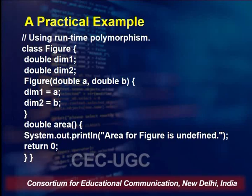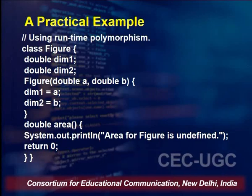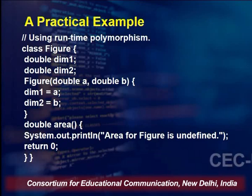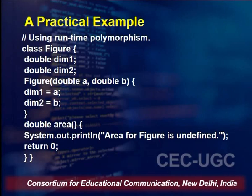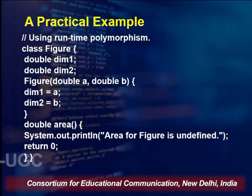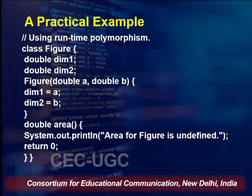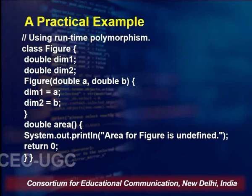Here we have a class Figure which has two dimensions — dim1 and dim2 — both of type double. There is a constructor taking two double values a and b, which are assigned to dim1 and dim2 respectively. This class Figure also has one method named area. Please notice that this area method is not doing any calculation because the area formula for a particular figure is going to be different.